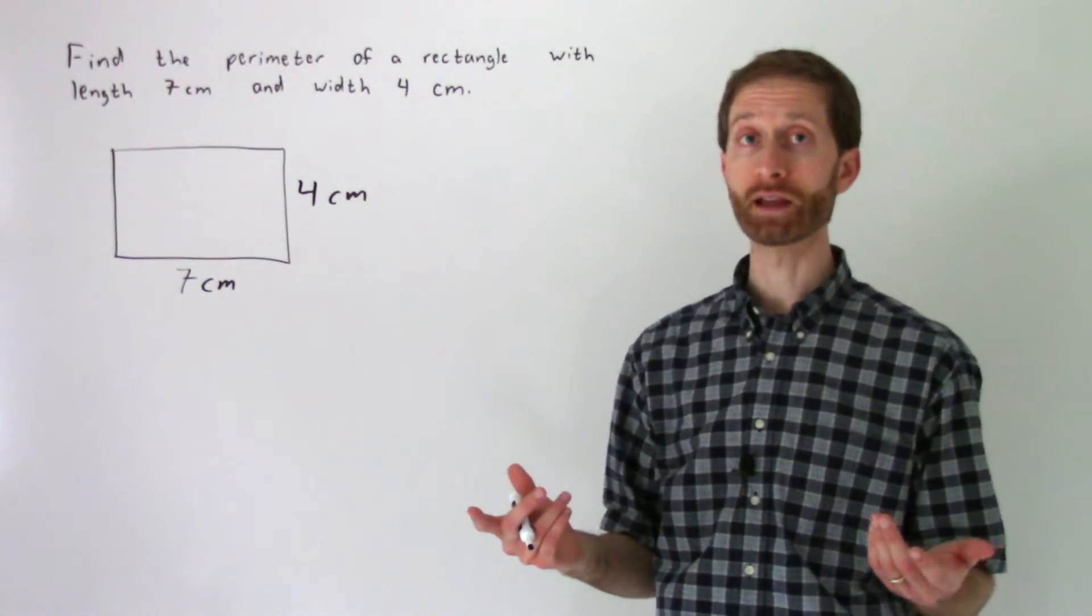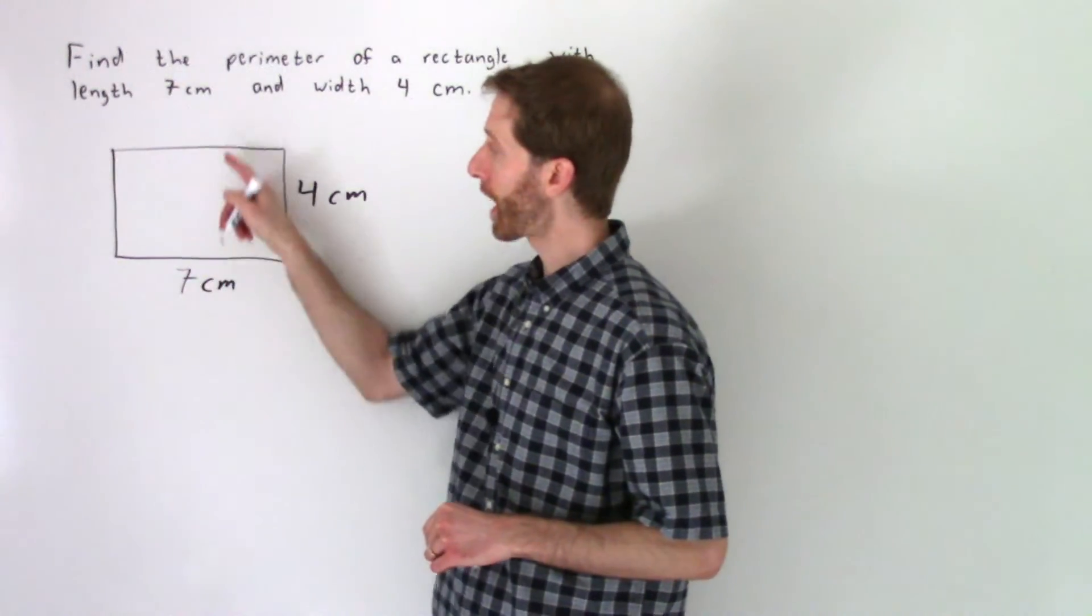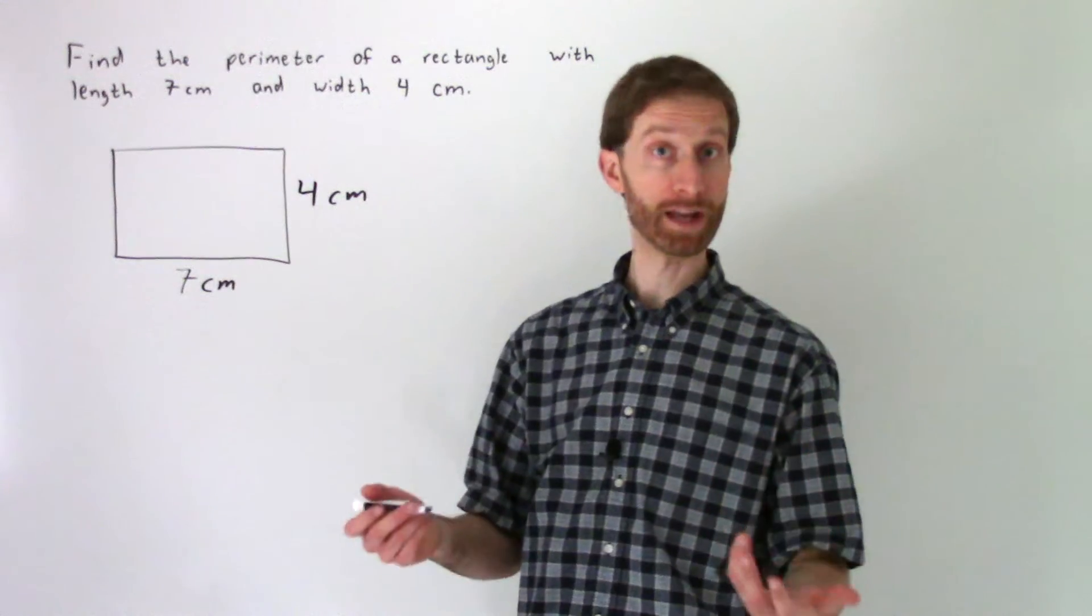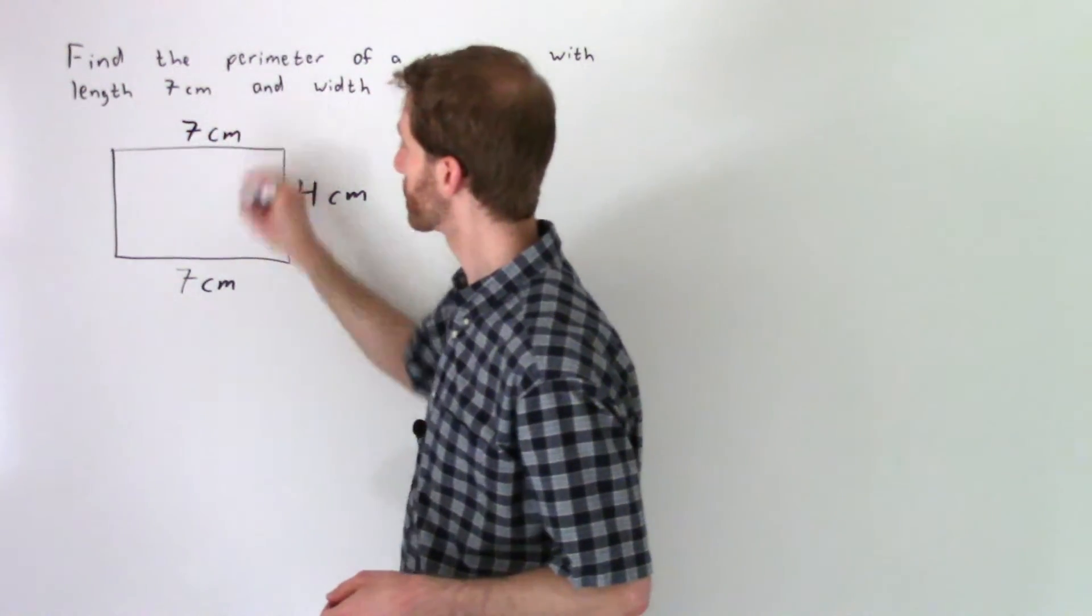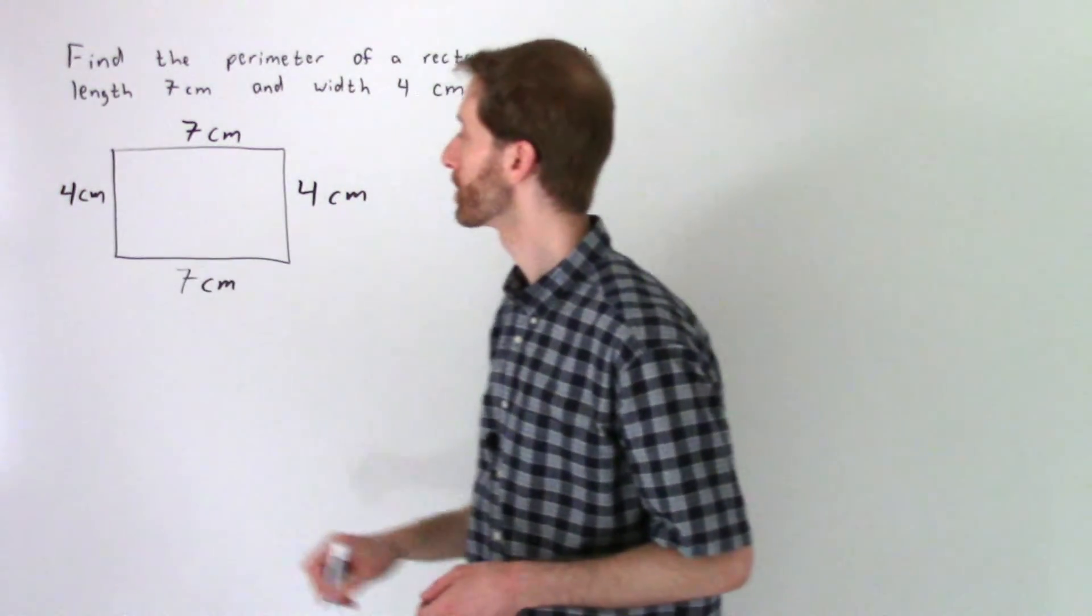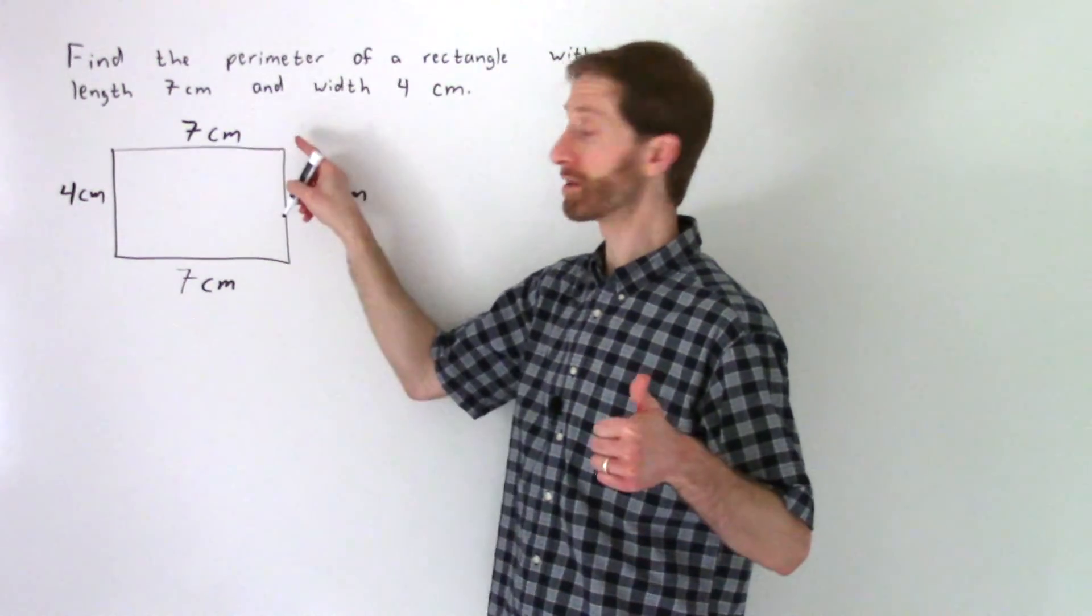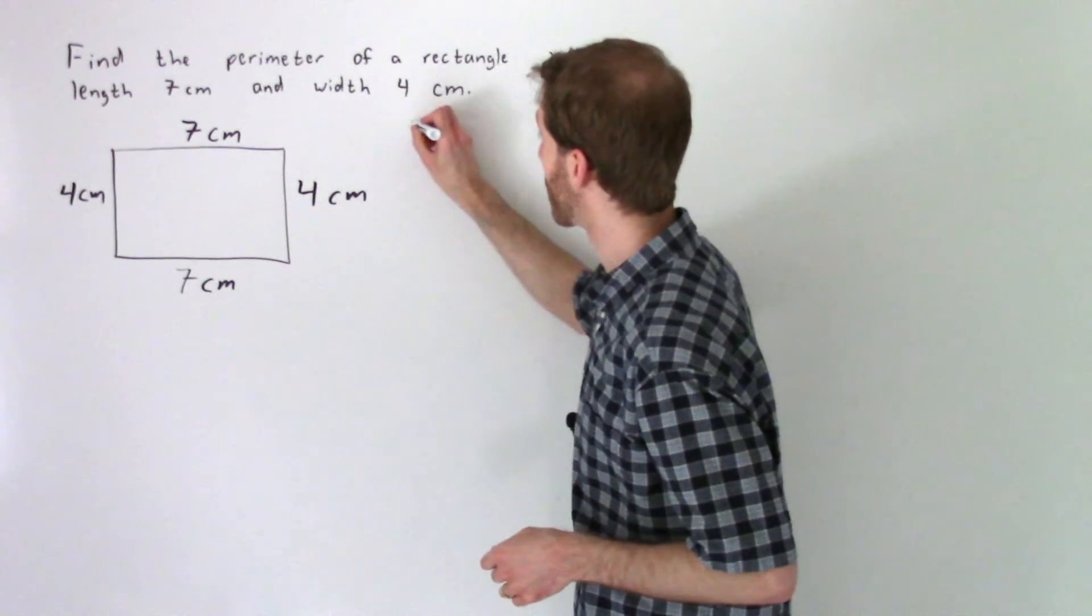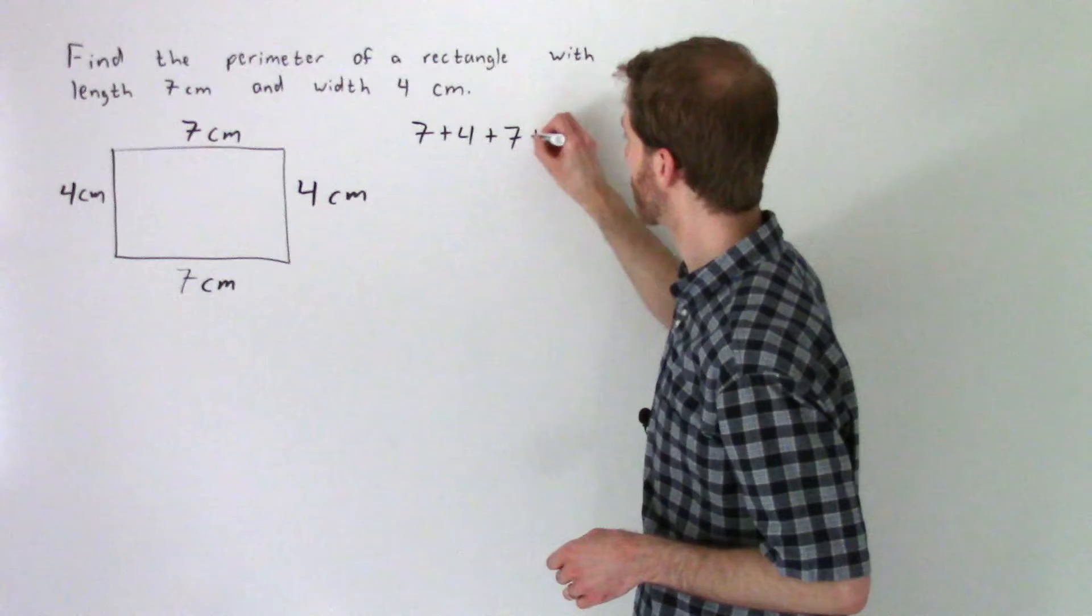So first, let's just add up all four side lengths, and that'll lead to a formula. So if we look at the side lengths, we know that the opposite sides of a rectangle are always congruent or the same length. So this would also be 7 cm. It's opposite that length. And this is 4, so this is 4 right here. So what do we do to find the perimeter? We start here and we add 7 plus 4 plus 7 plus 4. And we'll do that out here. So the perimeter is 7 plus 4 plus 7 plus 4.